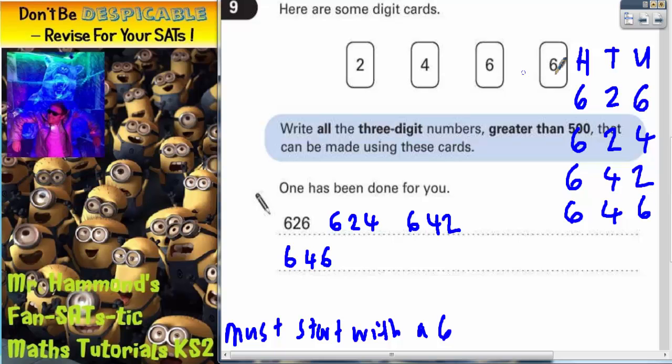We could now use the other 6 to make 660 somethings. So we could have 662 or we could have 664. So 662 or 664.